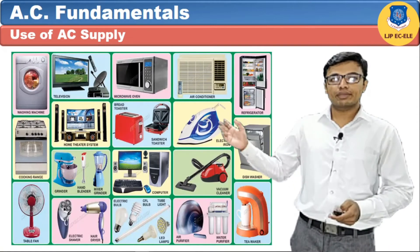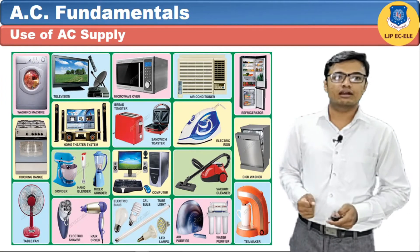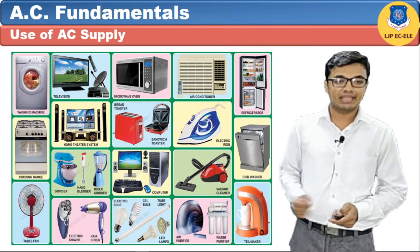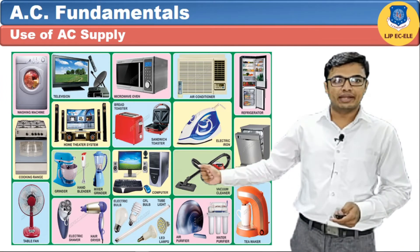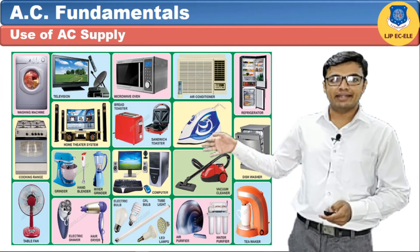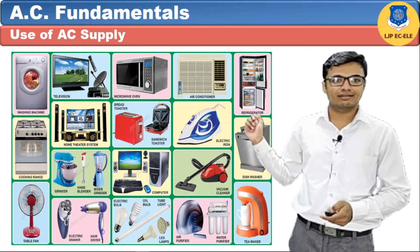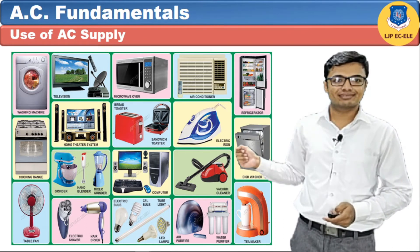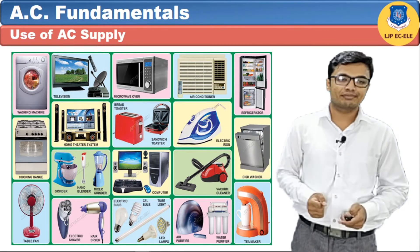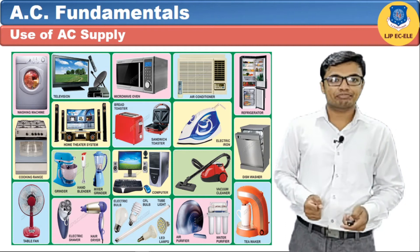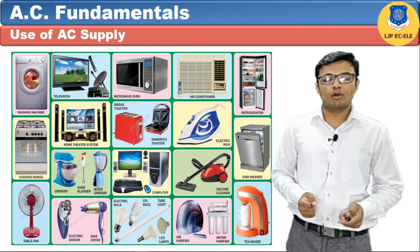Here you can see various domestic appliances like a washing machine, table fan, grinder, mixer, refrigerator, air conditioner, tea maker, dishwasher, etc., which require an AC motor.